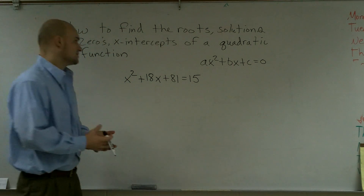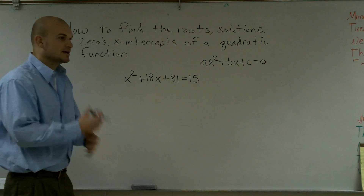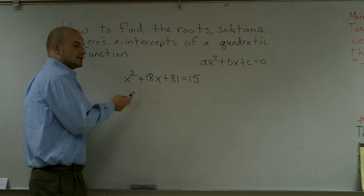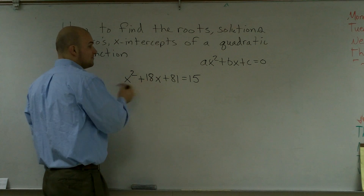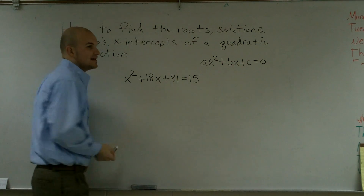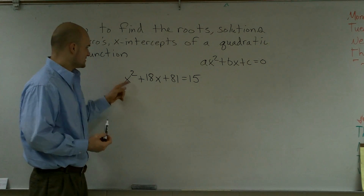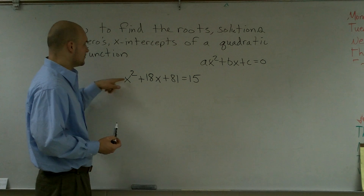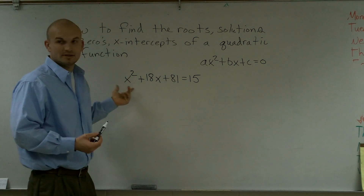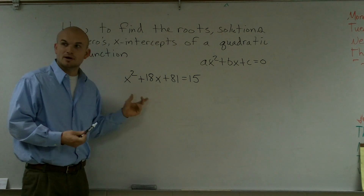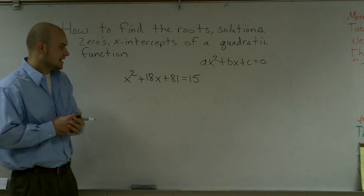Usually the first thing we do is look at: can we factor anything out? Can I take anything out of here? You look at whether there's any number that all four of my terms have. They don't all have an x, and I don't think there's any number that goes into one. Since one is here, one has to be the lowest number. So there's nothing that goes into all of them that I can take out.